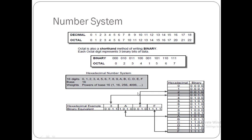We should remember these number systems — they are very important and can be used for different types of data. When you are assigning values, you need to know whether the data is in binary, octal, decimal, or hexadecimal. I think you may have learned something new from this video which can help boost your career in automation. Thank you so much for watching.